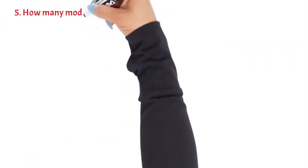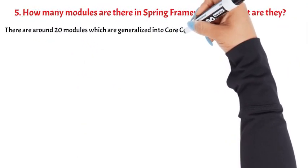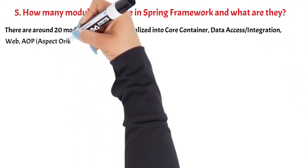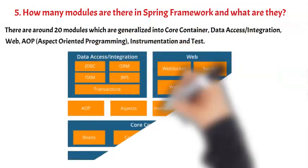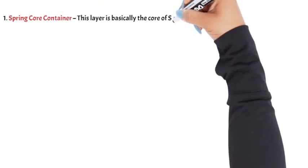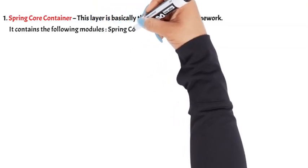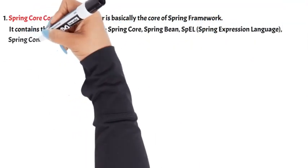Question 5: How many modules are there in Spring Framework and what are they? There are around 20 modules generalized into: core container, data access/integration, web, AOP (aspect-oriented programming), instrumentation, and test. 1. Spring Core Container: This layer is basically the core of Spring Framework. It contains the following modules: Spring Core, Spring Bean, SpEL (Spring Expression Language), and Spring Context.